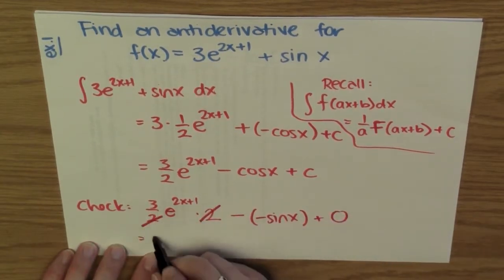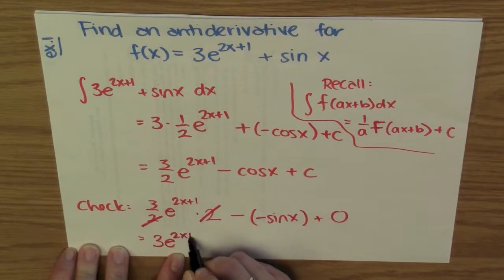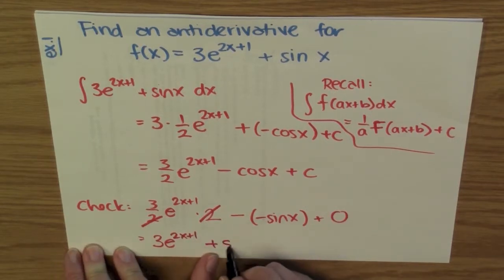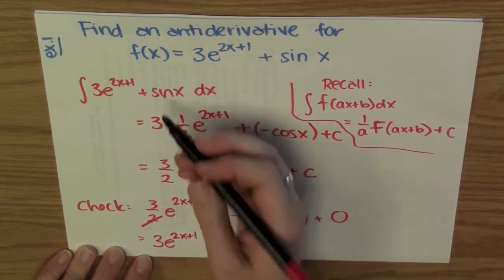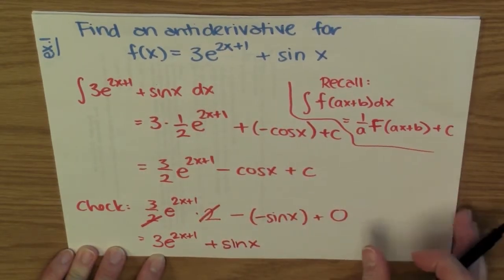Cleaning this up: this 2 and this 1/2 cancel, so I have 3e^(2x+1). Two negatives make a plus, and I have plus sin(x), which is my original function.